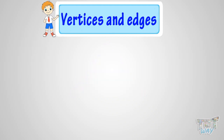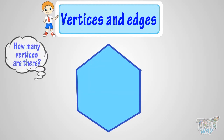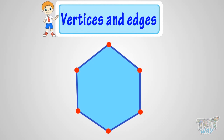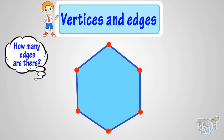Now here we have another figure. Let's see how many vertices are there in this figure. We know vertices are the points where two edges meet, or they are the corners in the figure. So let's count: one, two, three, four, five, six. Six vertices are there in this figure.